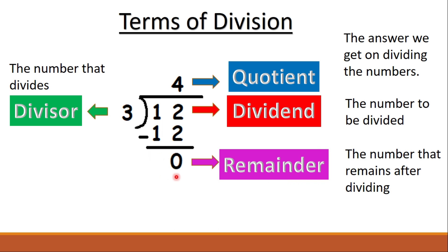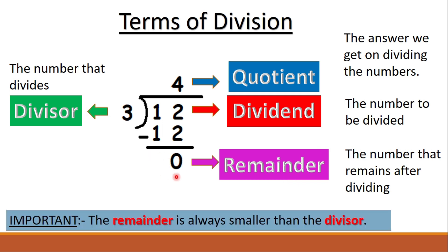The number that remains after dividing is known as the remainder — here we have 0 as the remainder. An important point to note: the remainder is always smaller than the divisor. Here the remainder is 0 and the divisor is 3, and 0 is smaller than 3. Did you notice that the quotient equals the number of times we subtracted?